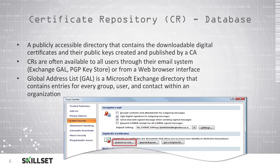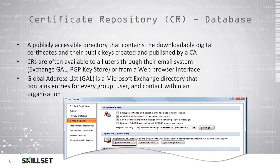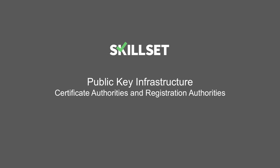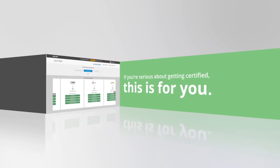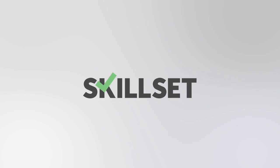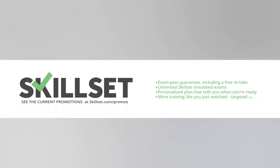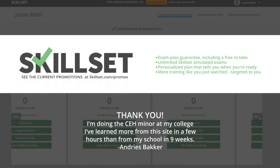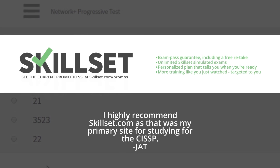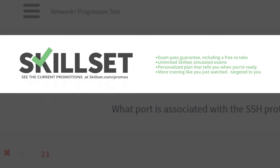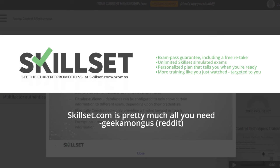Microsoft Exchange offers the global address list, which is a directory with an entry for every group, user, and contact within an organization, and the digital certificate can be attached to this contact information. This makes it very easy for users — most do not even know the digital signature process is occurring in the background when sending and receiving emails with trusted contacts. This concludes our public key infrastructure module. Thank you for watching.